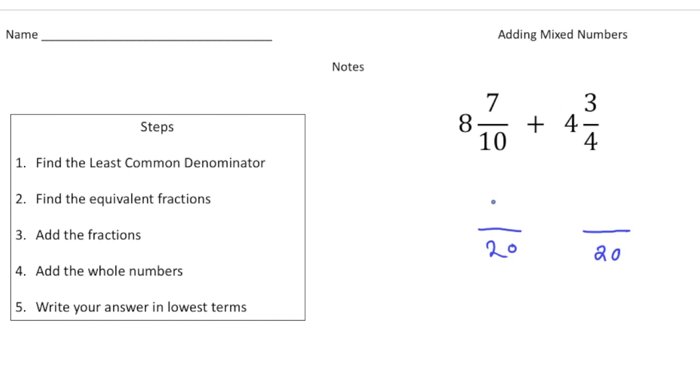This is going to be fourteen twentieths, and this one is going to be fifteen twentieths. Now I'm going to add these fractions together. Now we're in step three. Fourteen twentieths and fifteen twentieths gives us twenty nine twentieths, which if you write as a mixed number is going to be one and nine twentieths.